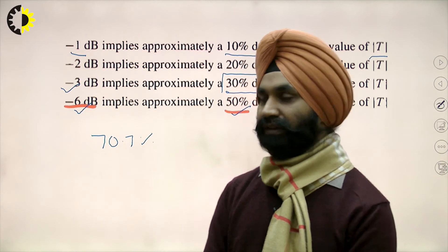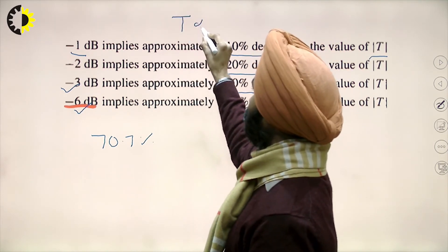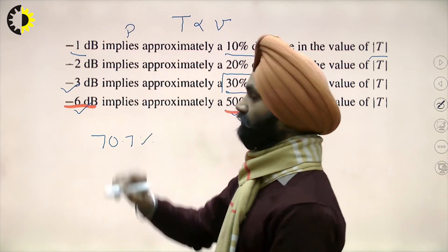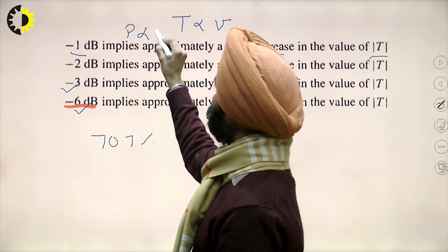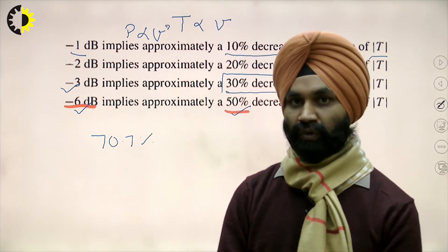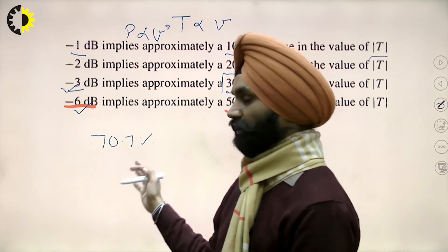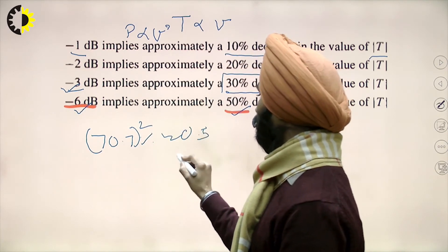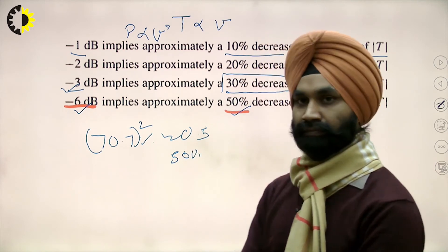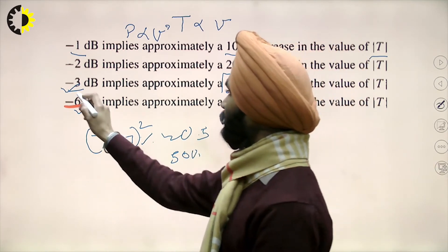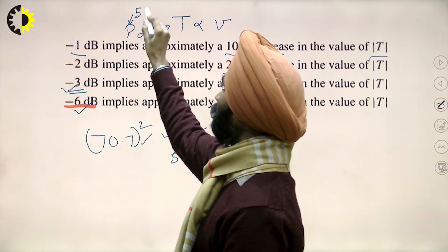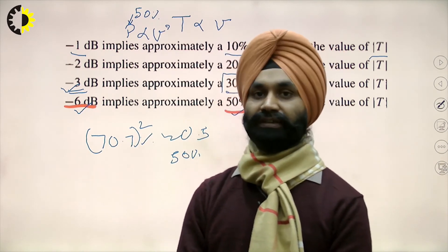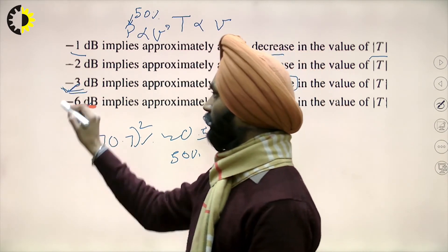When dealing with power rather than voltage, the voltage must be squared — power is proportional to V². At −3 dB, the voltage remaining is 1/√2 ≈ 0.707, and squaring this gives approximately 0.5, or 50% of the power. That means at −3 dB, the power is approximately 50% of the original value — half of the power has been lost. This half-power point is therefore very important.